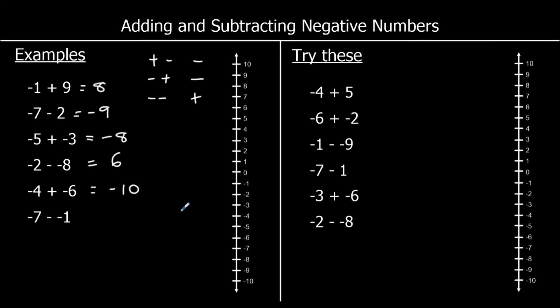And finally, negative 7 is our starting point. Take away a negative 1 — when we take away a negative, that's the same as adding. So negative 7 up 1 is negative 6.